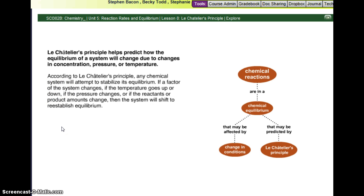Le Chatelier's principle helps predict how the equilibrium of the system will change due to changes in concentration, pressure, or temperature. So when they're talking about concentration, they're saying if I add more reactant or take away reactant, pressure, again with gases, and temperature, which really depends on if it's exo or endothermic. According to Le Chatelier's principle, any chemical system will attempt to stabilize its equilibrium. If a factor of the system changes, if the temperature goes up or down, if the pressure changes, or if the reactants or product amounts change, then the system will shift to reestablish equilibrium.